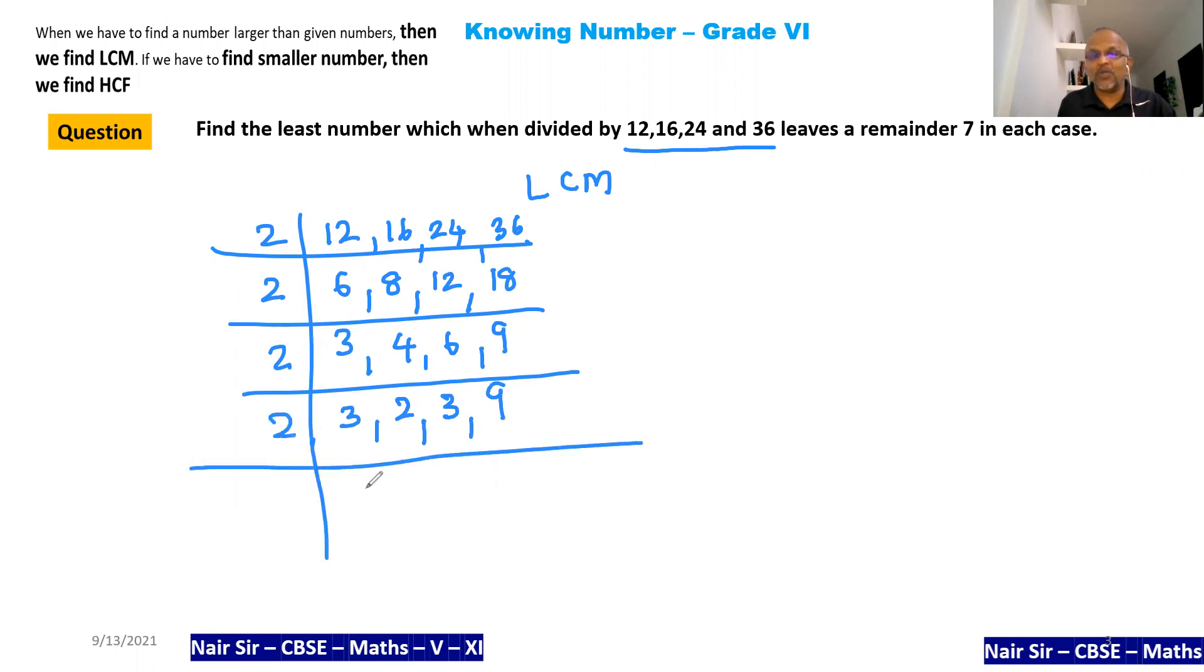And then last is 3: 1, 1, 1, and 1. Whenever I am finding LCM, get this habit of getting 1, 1, 1 below, so you'll never make a mistake.